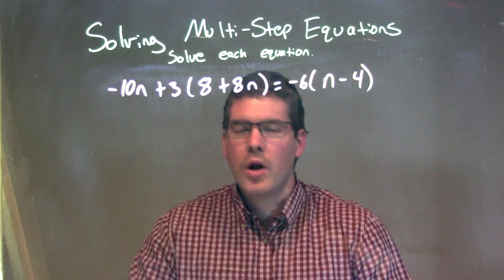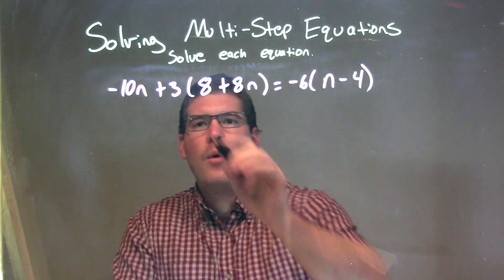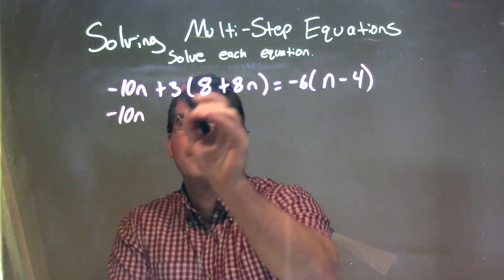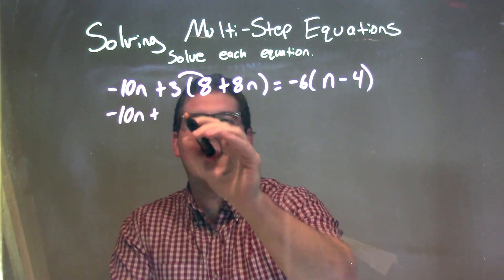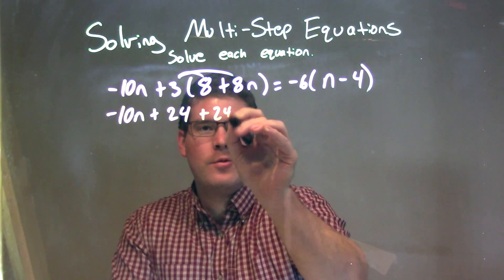Okay, so what I want to do from here is simplify both sides of the equal sign. What I need to do is distribute the 3 across both sides of that parentheses. So I have -10n here, distribute that 3. 3 times 8 is 24, and 3 times 8n is 24n.